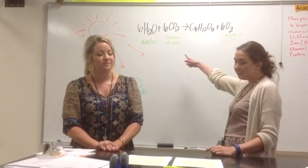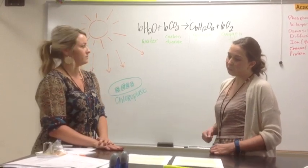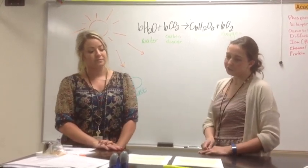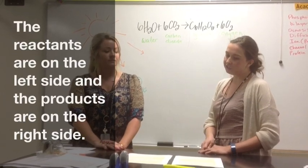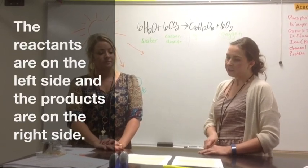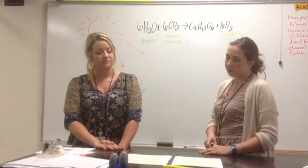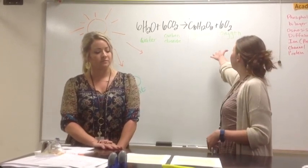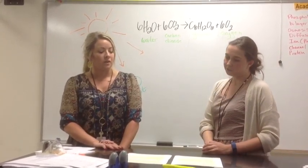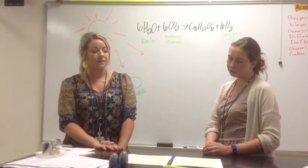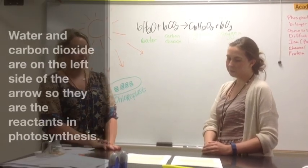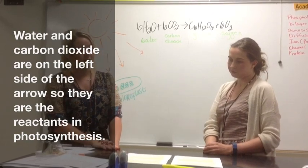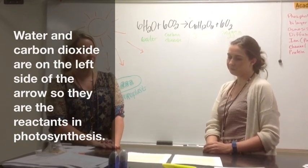The reactants are on the left side and the products are on the right side. For photosynthesis, the reactants are water and carbon dioxide. Water and carbon dioxide are on the left side of the arrow, so they must be the reactants. The products are glucose, a sugar, and oxygen, which are on the right side of the arrow.